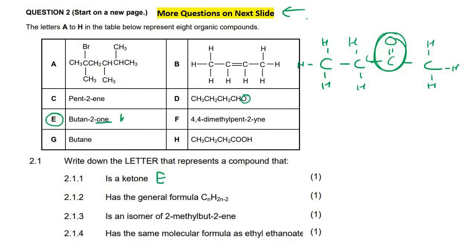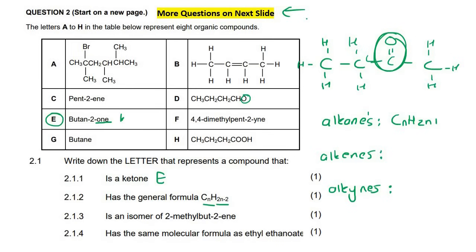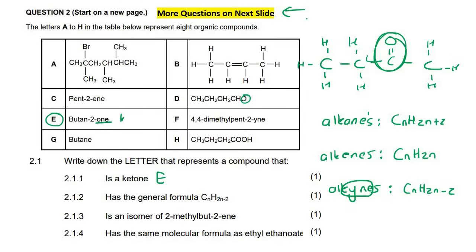Which substance has the general formula CₙH₂ₙ₋₂? You should know from your general theory on organic chemistry that we've got three types of hydrocarbons: alkanes have the general formula CₙH₂ₙ₊₂, alkenes CₙH₂ₙ, and alkynes CₙH₂ₙ₋₂. So we know that this is an alkyne, which is something that has a triple bond. In the word alkyne, we can also see Y-N-E, so these are substances that end in Y-N-E, and so this one would be F.